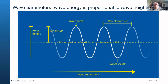Going back to basics: the wave amplitude is the height above or below the mean sea level. The wave crest is the highest point, the wave trough is the lowest point, and the wavelength is the distance between two successive crests. The wave height is twice the wave amplitude — the distance from trough to crest — and the wave energy is proportional to the wave height squared.